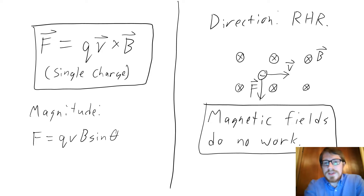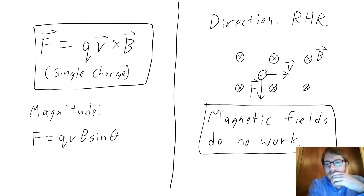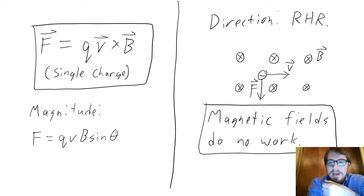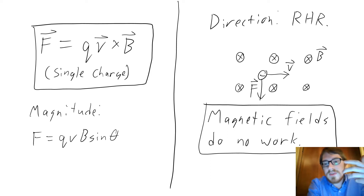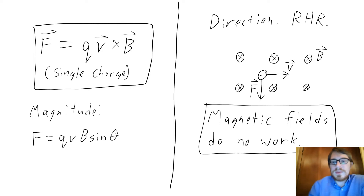Because the magnetic force on moving electric charges is always perpendicular to the direction of motion, magnetic fields will do no work. The force exerted is always perpendicular to the direction of motion, so you don't have a force in the direction of motion times some distance, and the work is always zero.